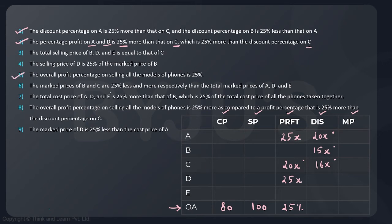Statement six: the marked prices of B and C are 25% less and more respectively than the total marked price of A, D and E. This also we can't use right now, so I am leaving it for later.